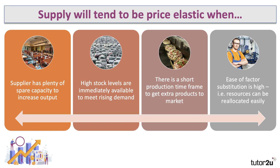Supply tends to be price elastic when there is a short production timeframe to bring extra products to market — for example, to make some extra pizzas or manufacture baked beans, the production process itself does not involve a lengthy time process. Additionally, when firms can bring in other factors of production fairly quickly — more labor or more capital — and when the ease of factor substitution is high, so that scarce inputs can be reallocated easily to help meet growing demand, supply tends to be price elastic.